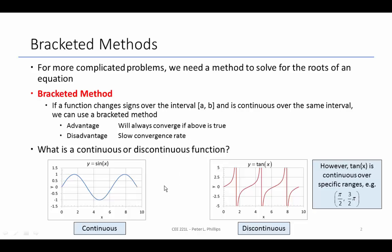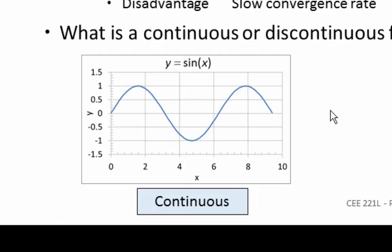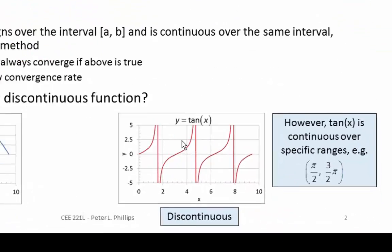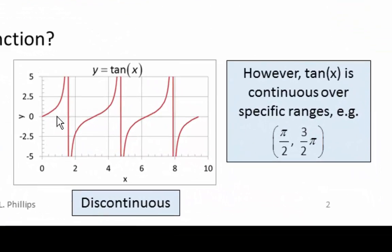So what is a continuous or discontinuous function? A good example are trig functions. The sine equation is continuous, so there are no breaks or discrete points where we have gaps. On the other hand, the tangent equation is discontinuous because it goes to infinity and negative infinity. We cannot use a bracketed method over this discontinuity. However, we can use the bracketed method in the region of this discontinuous function where it's continuous, say between 2 and 4.